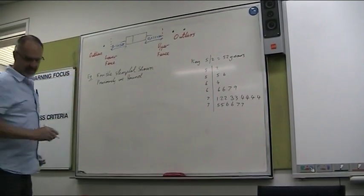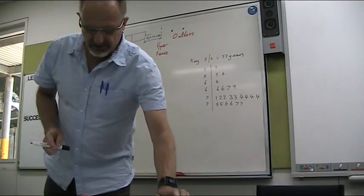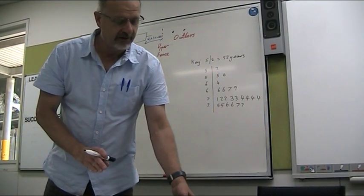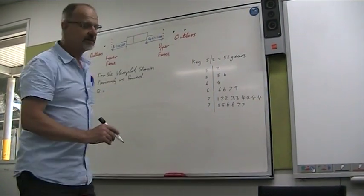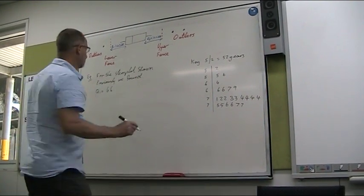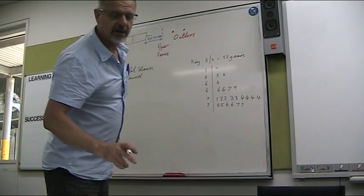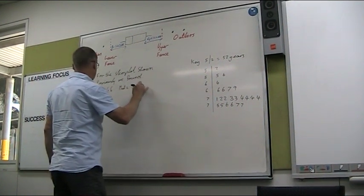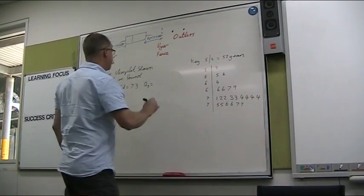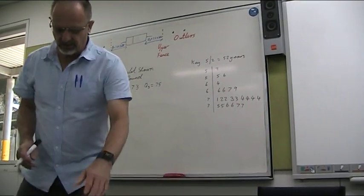Alright, so that's the data we used the other day, so previously we found that Q1 was, this is the one I made a mistake on, so I'm going to go back and make sure I hit the right stuff here, 66, our median was 73, and our third quartile was 75.